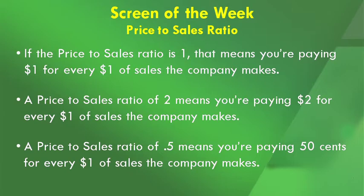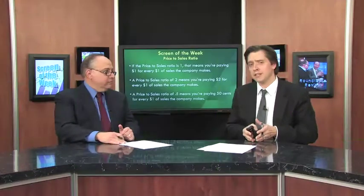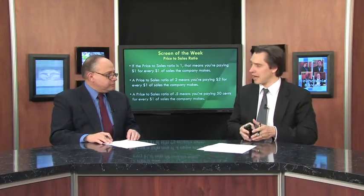A price-to-sales ratio of two means you're paying two dollars for every one dollar of sales. As you might have guessed, the lower the ratio the better. A ratio of 0.5 means you're paying 50 cents for every one dollar of sales — and if you can pay less than a dollar for a dollar's worth of something, that's a good bargain.